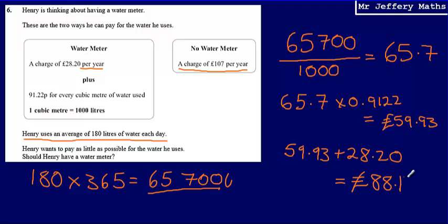So should he have a water meter fitted? Is that better than having no water meter? And we can see that it is. And so our answer to this question, should Henry have a water meter? The answer is yes, because it's a cheaper price. It's £88.13, instead of £107 per year.